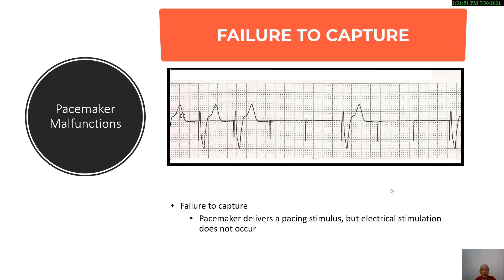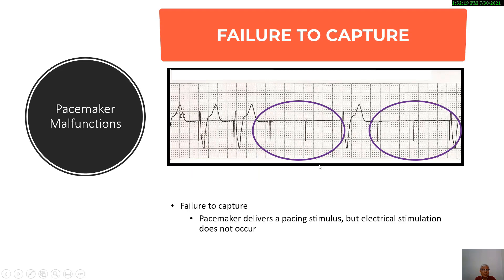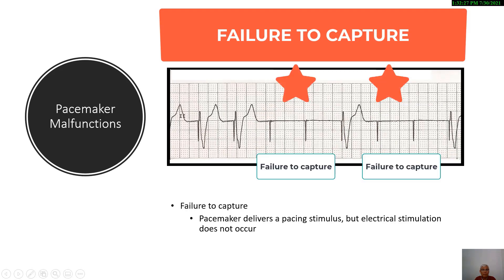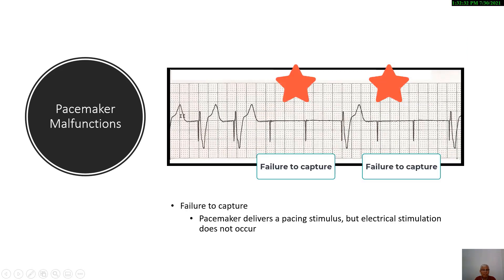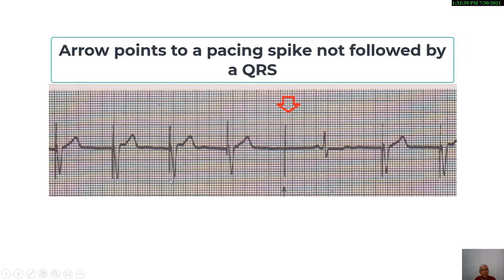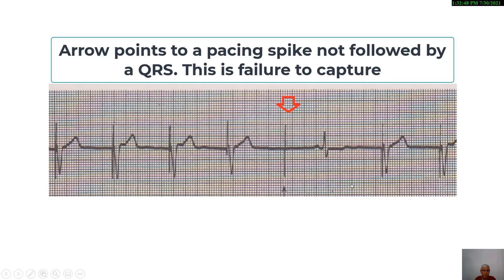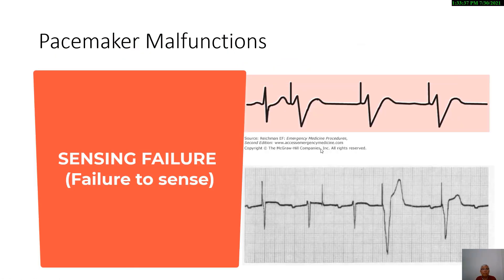Another malfunction is failure to capture, where an electrical activity is discharged by the pacemaker but does not result in any depolarization wave. In the example, the first two beats are successfully captured, but on the third, fourth, and succeeding beats, pacing spikes are not followed by a QRS complex — this is failure to capture. Another example shows a ventricular pacemaker where a pacing spike is not followed by a QRS complex, confirming failure to capture.